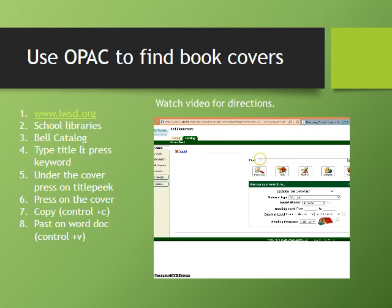Then we're going to click on the Catalog tab. In the Catalog tab, it has the Find button. I know that I want to do my project on the book Duke, so I'm going to type in Duke. I don't have to worry about capital letters or lowercase — it's just fine. I know that's the title, so I'm going to click on Title.